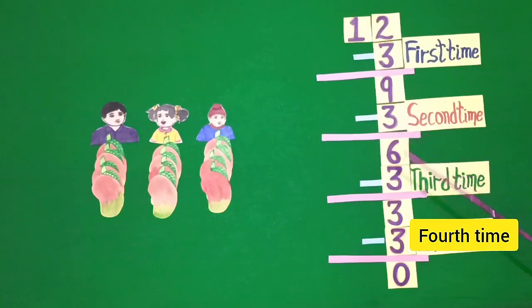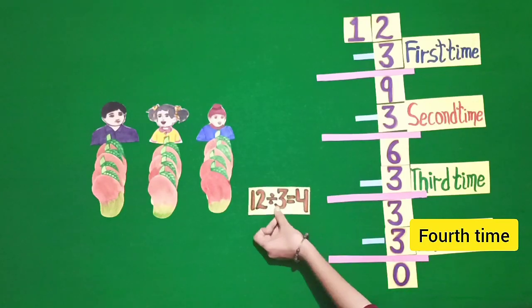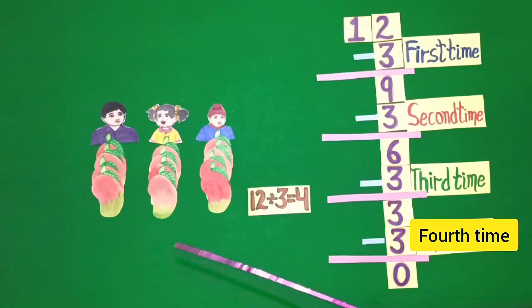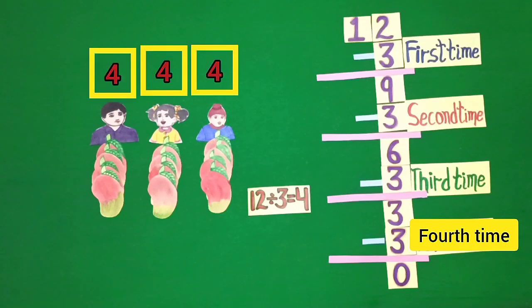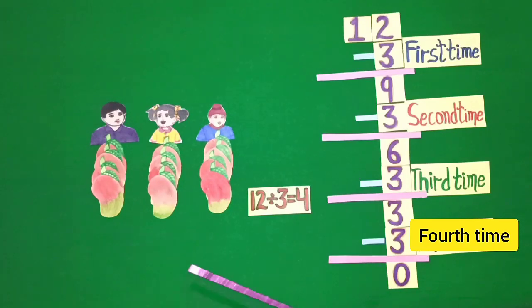Students, subtracting same number repeatedly means division. Today, we learn division with subtraction method. Students, tell me how many mangoes did each child get? Yes, each child got 4 mangoes. Students, we subtract 4 times to divide 12 mangoes among 3 children. It means 12 divided by 3 is equal to 4.